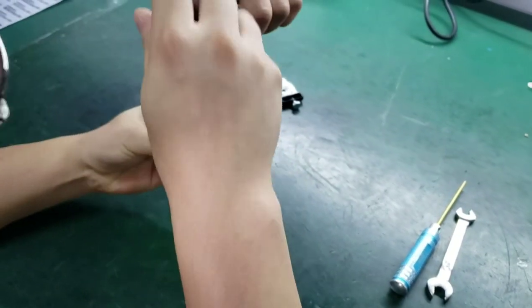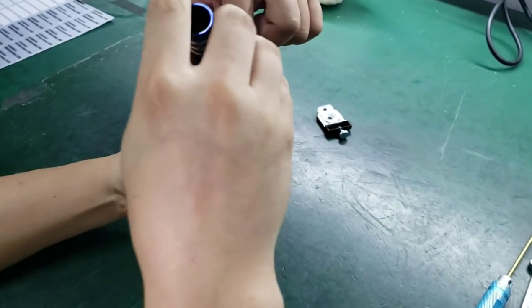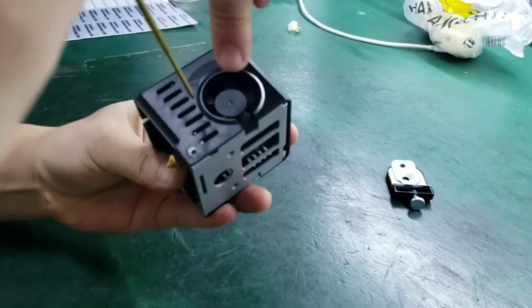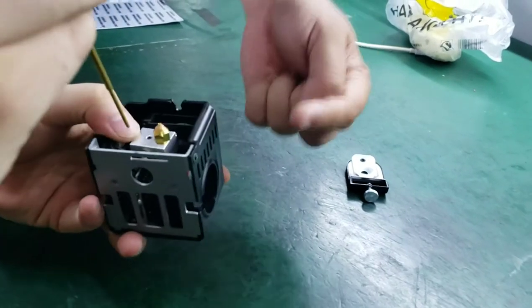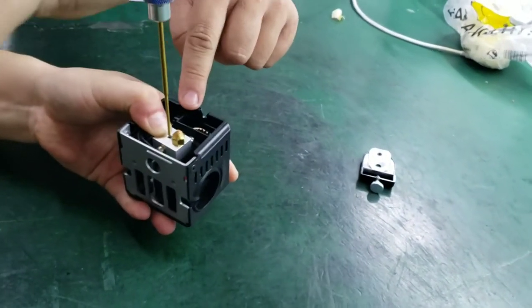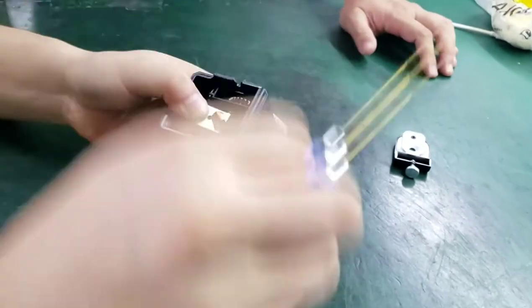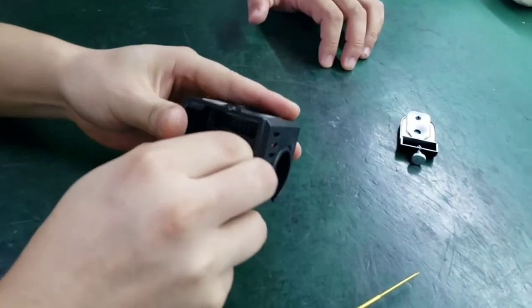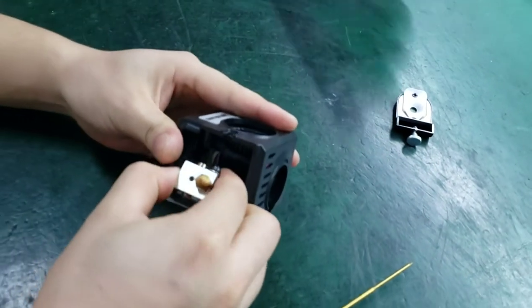From the side, you use 1.5mm hex wrench to loose the belt from the side. The fan from the side is on one of the locking belt. And then you loose the belt on the hot end so you can pull the full hot end off.